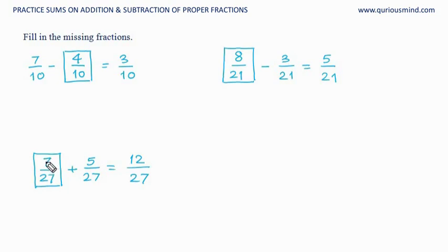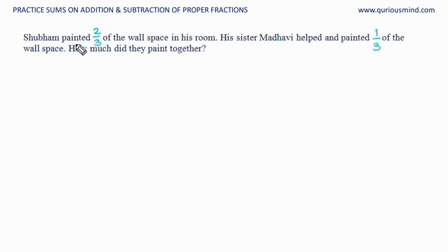Let's do the next one. Shubham painted two-thirds of the wall space in his room. His sister Madhavi helped and painted one-third of the wall space. How much did they paint together? So we have to add these two because we want to find how much did they paint together. That indicates it's an addition.